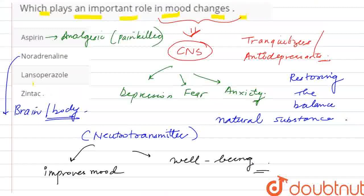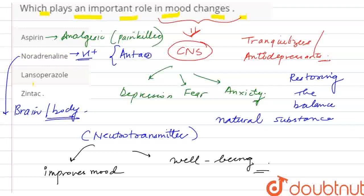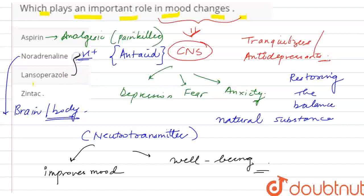Next is Lansoprazole. This is a medication used to remove excess acid concentration in the stomach. It is an anti-acid that opposes acid and maintains the pH. So Lansoprazole is our anti-acid, which reduces the excess of acid in the stomach.